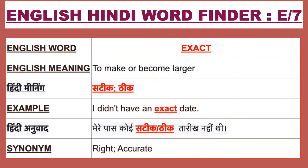Our last English word today is 'exact'. Exact ka Hindi meaning hai 'satik' or 'thik'. For example: 'I didn't have an exact date.' Isse Hindi mein bolenge: 'Mere paas koi satik ya thik tarikh nahi thi.' Synonyms of exact are right and accurate.